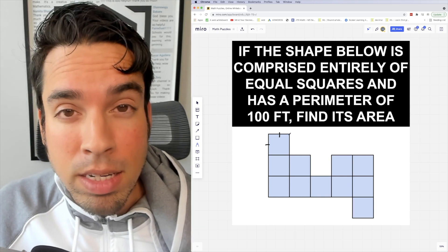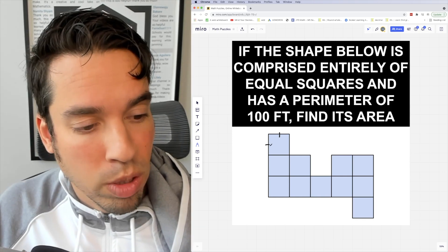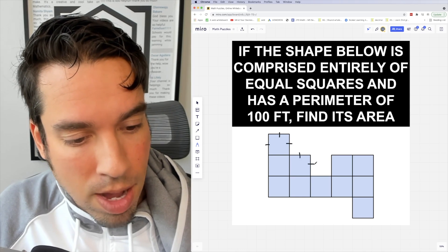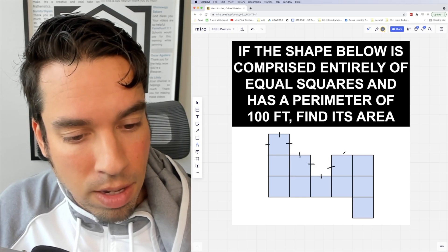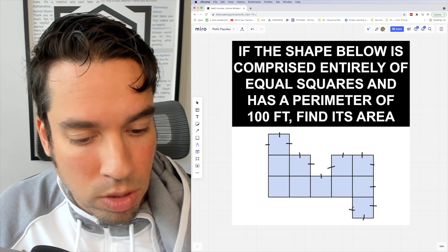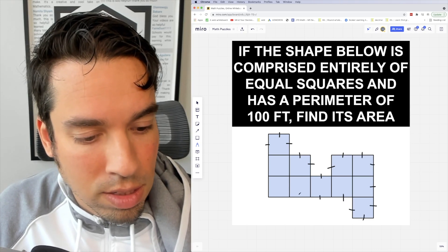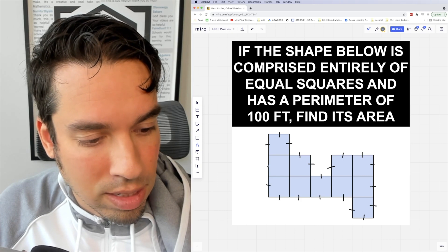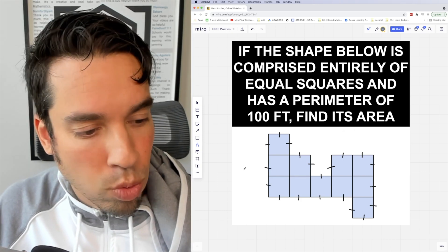So here we got one, two, three, four, five, six, seven, eight, nine, ten, eleven, twelve, thirteen, fourteen, fifteen, sixteen, seventeen, eighteen, nineteen, and twenty. 100 divided by 20 is, of course, 5.